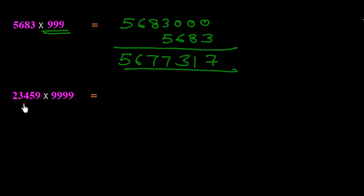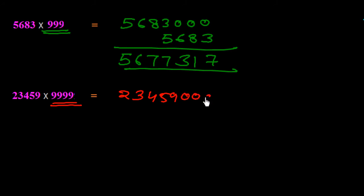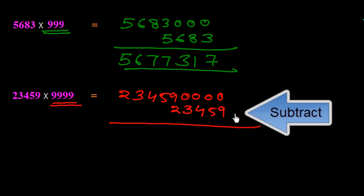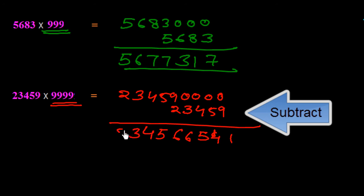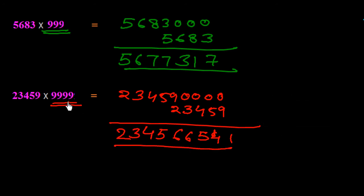Here, 23459 multiplied by 9999. There are 4 digits in the 9-series, so we add four zeros on the right side: 234590000. Then we subtract 23459. So: 10 minus 9 is 1, 9 minus 5 is 4, 9 minus 4 is 5, 9 minus 3 is 6, 8 minus 2 is 6 — then 54321, giving the answer 234566541.